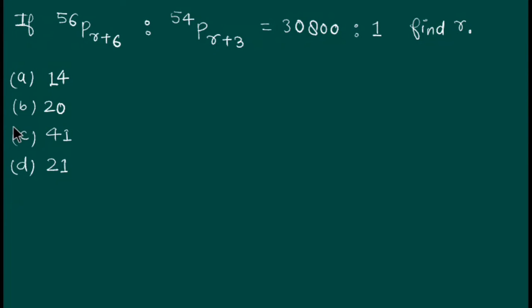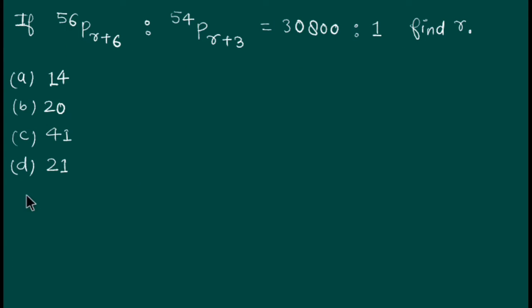Hello guys, welcome back to Solution Mitra. Today's question is: if 56Pr+6 ratio 54Pr+3 equals 30800 ratio 1, find r. This is a permutation problem. Let's see how we find the value of r.